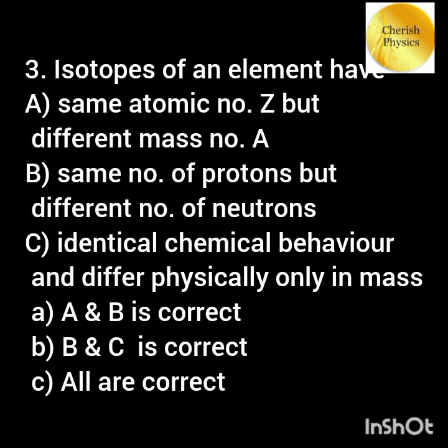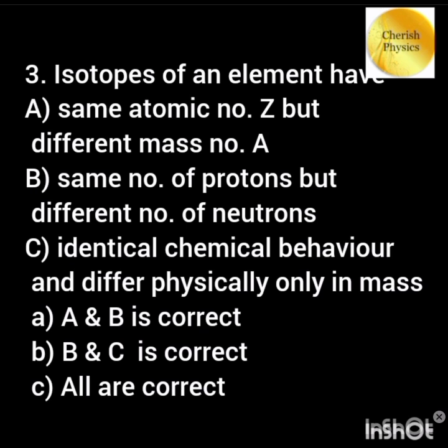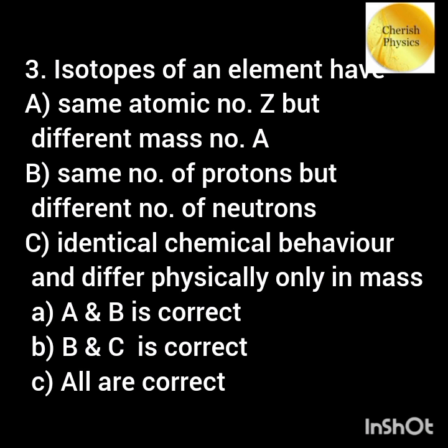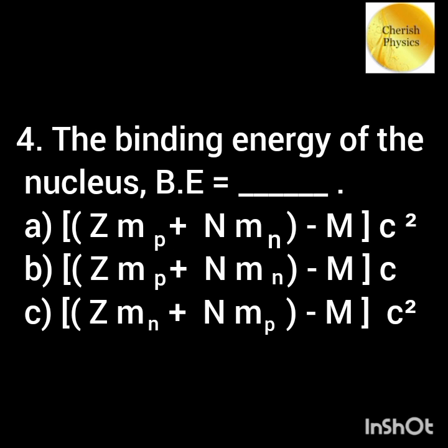Isotopes of an element have: option A — same atomic number but different mass number; option B — same number of protons but different number of neutrons; option C — identical chemical behavior and differ physically only in mass.